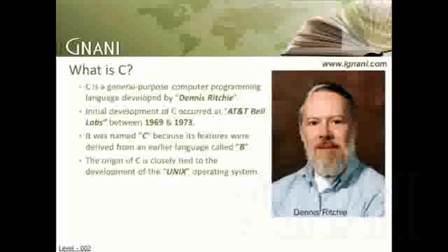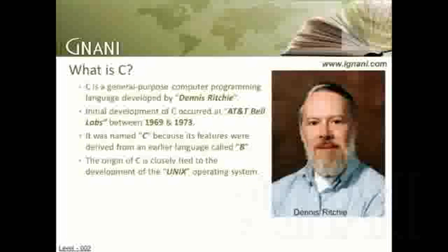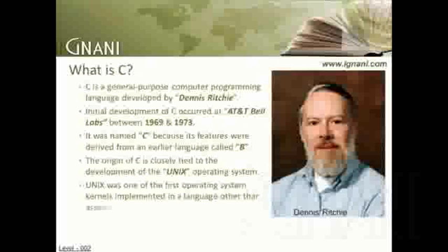The original PDP-11 version of the Unix system was developed in assembly language. By 1973, with the addition of struct types, the C language had become powerful enough that most of the Unix kernel was rewritten in C. This was one of the first operating system kernels to be implemented in a language other than assembly.